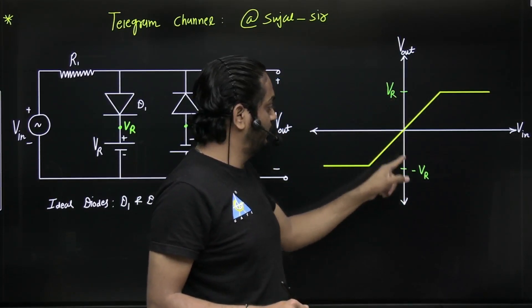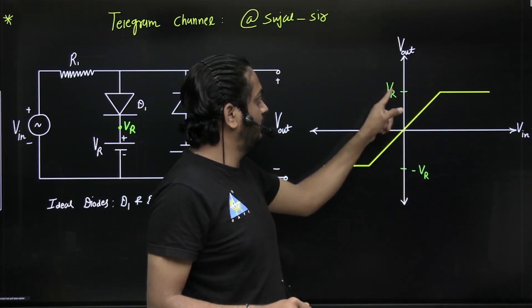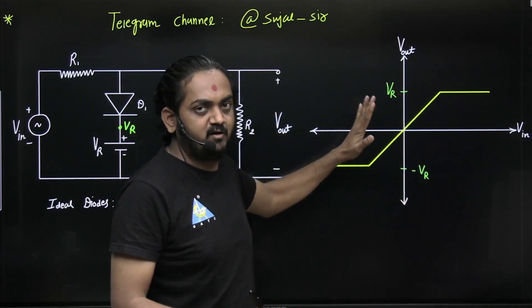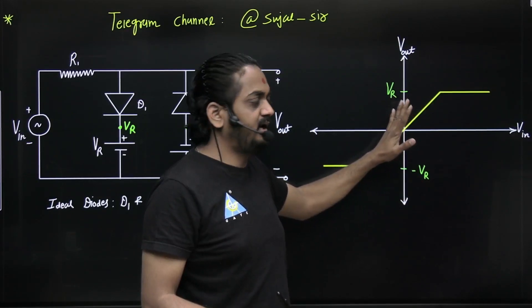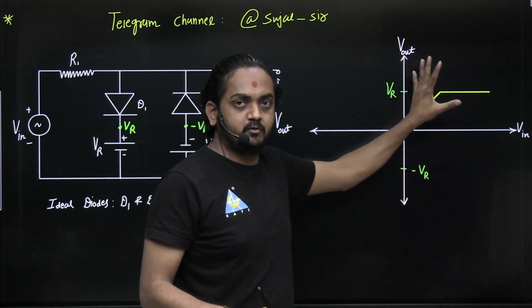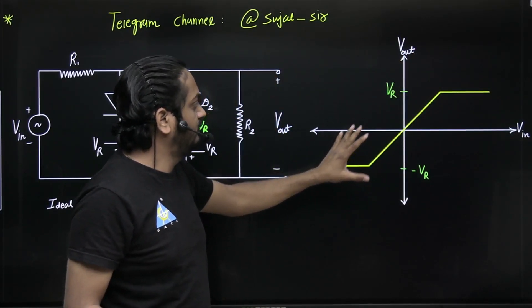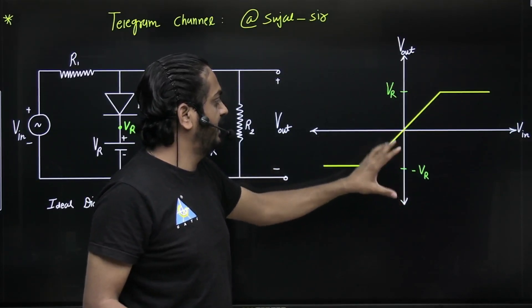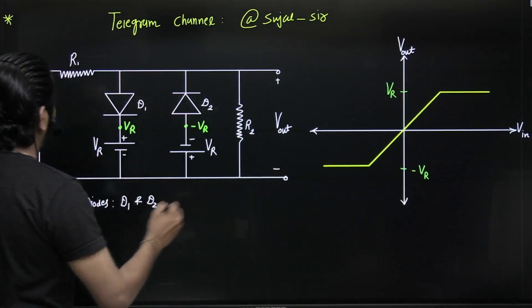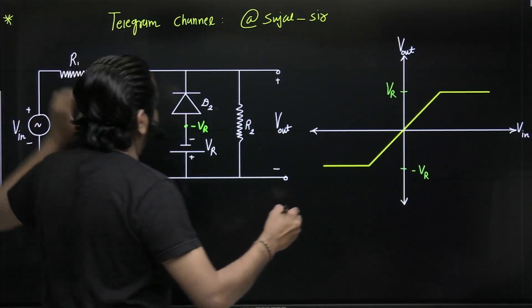But the shape will be the same. It can be in the first quadrant if both positive, in the third quadrant if both negative. Now what about the slope? The slope is nothing but...